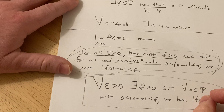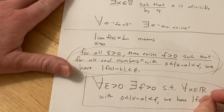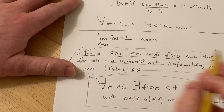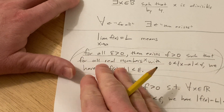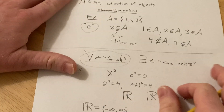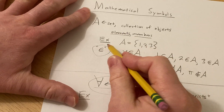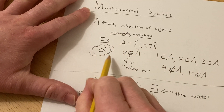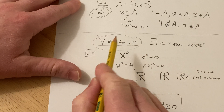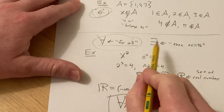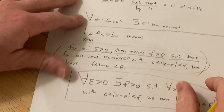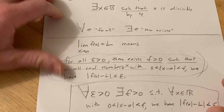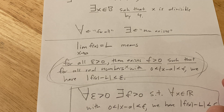So that was a crash course using quantifiers. To recap: the element-of symbol means 'belongs to,' 'is in,' or 'is a member of.' The upside-down A means 'for all' and the backwards E means 'there exists.' Just some extra math knowledge — good luck!